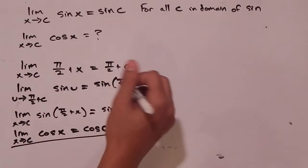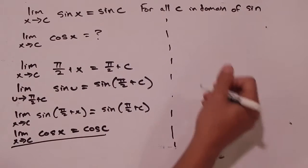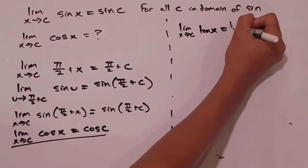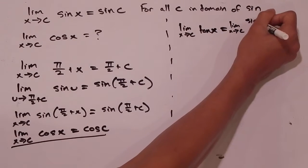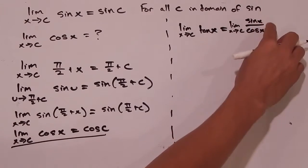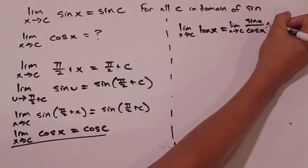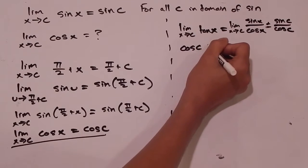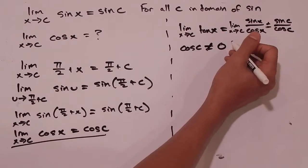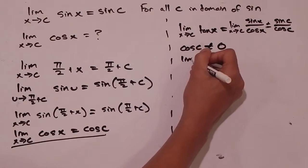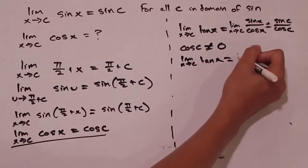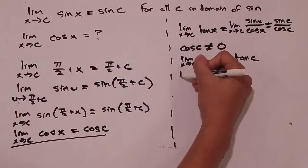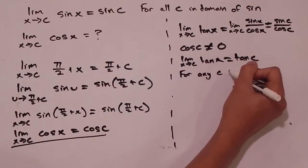So what about something like tangent? The limit as x goes to c of tangent of x is just equal to the limit as x goes to c of sine of x over cosine of x, which we know, based on our quotient rule, is just going to be sine of c over cosine of c. We can say that the limit as x goes to c of tangent of x is just equal to tangent of c, for any c in the domain of tangent.